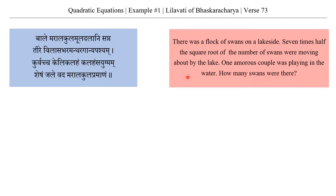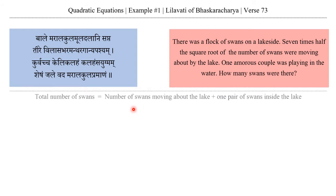From this we can get the quadratic equation of the example. Total number of swans equals number of swans moving about the lake plus one pair of swans inside the lake. We can take total number of swans as x square. If total number of swans is x square, then the number of swans moving about the lake will be 7 upon 2 into x. So our equation is as follows.